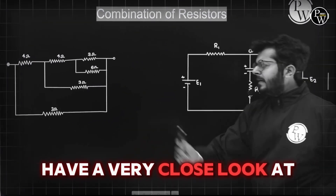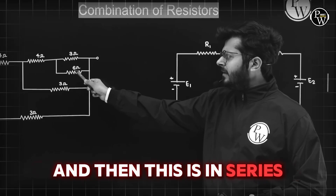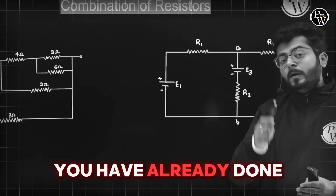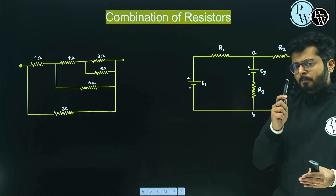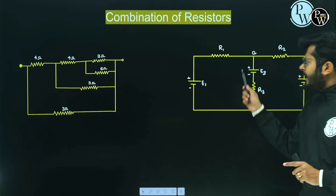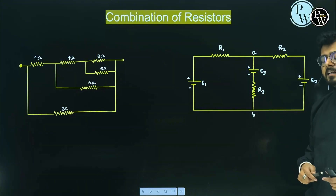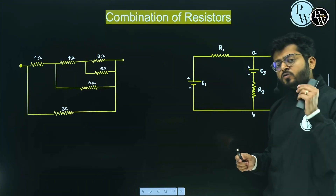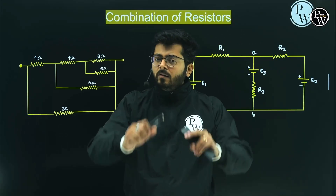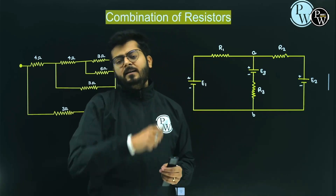My dear readers and friends, have a very close look at these two circuits. Upon a closer look, you can tell that these elements are in parallel and then in series, and you can further solve it by successive reduction — you've already done this in grade 10. But if you look at the same circuit of the same size, you can see that these elements, we cannot say they are in series or parallel. So we cannot solve it by successive reduction. These kinds of circuits, where we cannot identify which elements are in series and parallel, we will be learning to solve today.